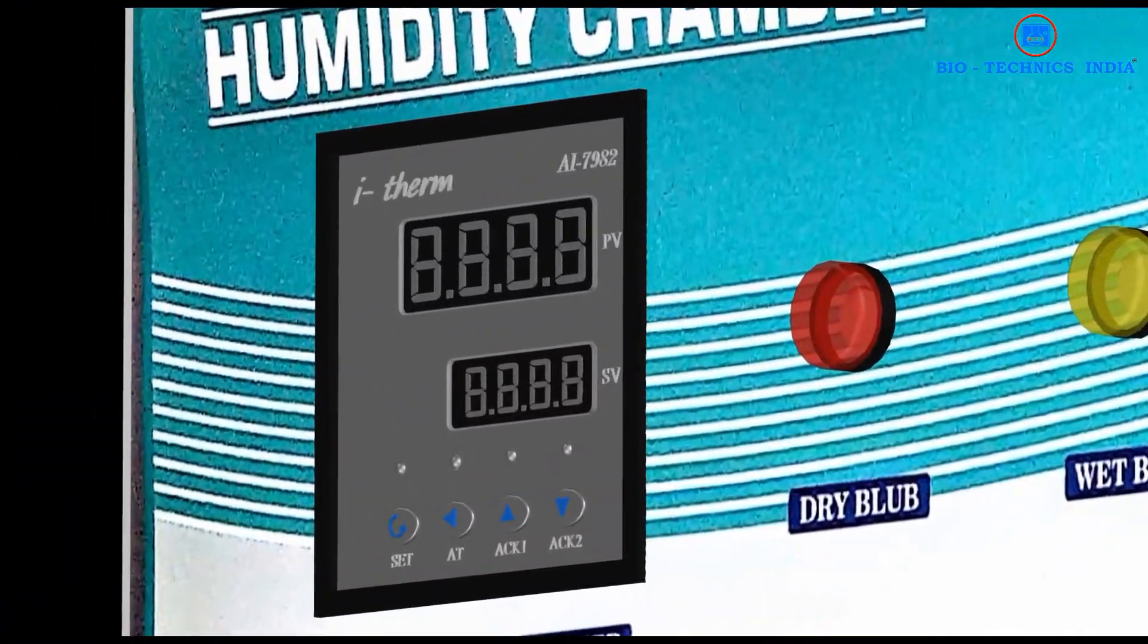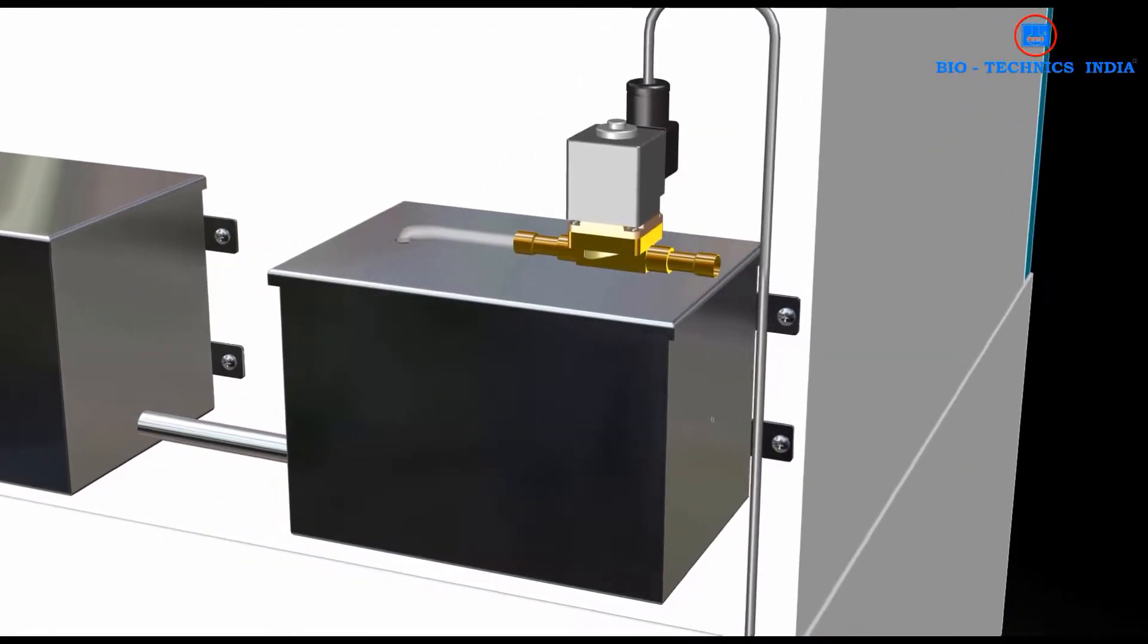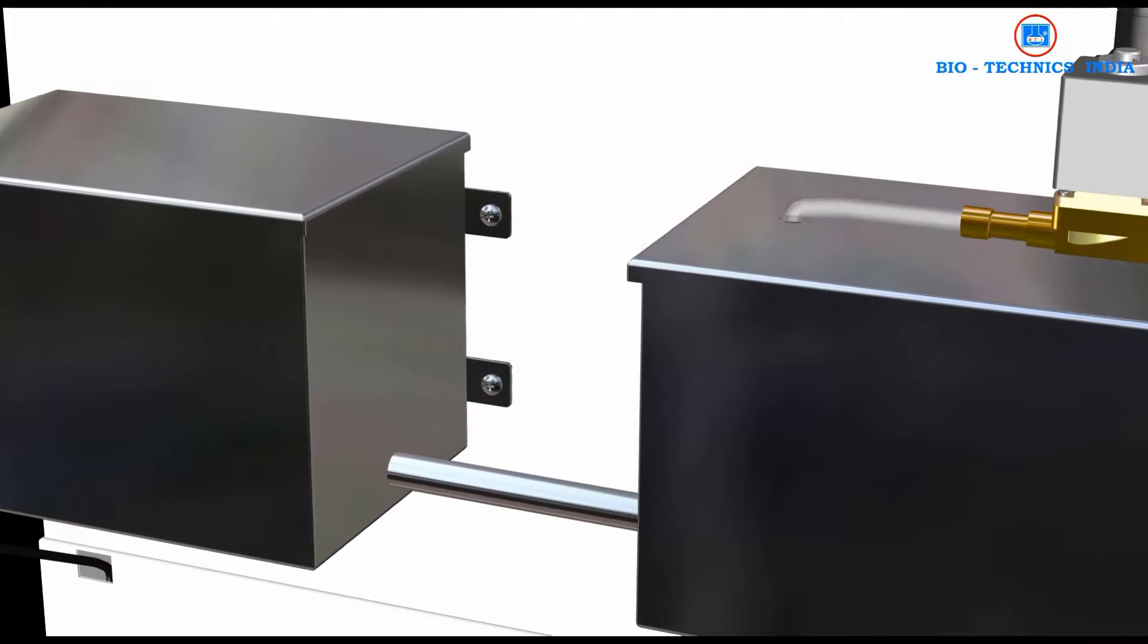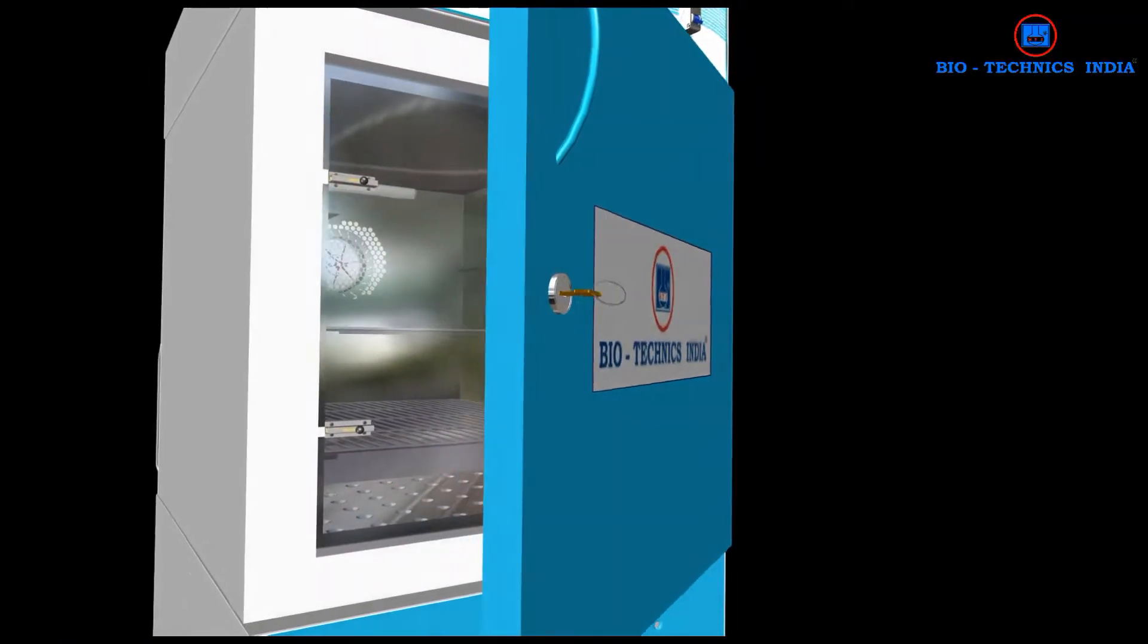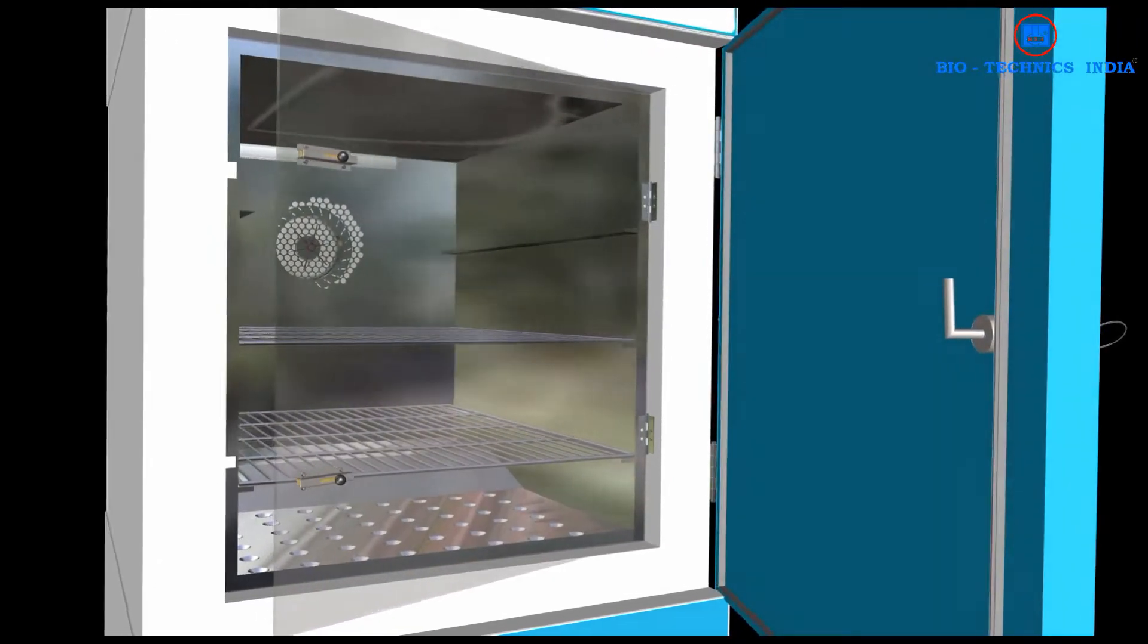A humidity chamber, also called a climatic chamber, is an enclosure used to test the effects of specified environmental conditions on biological items, industrial products, materials, and electronic devices and components.